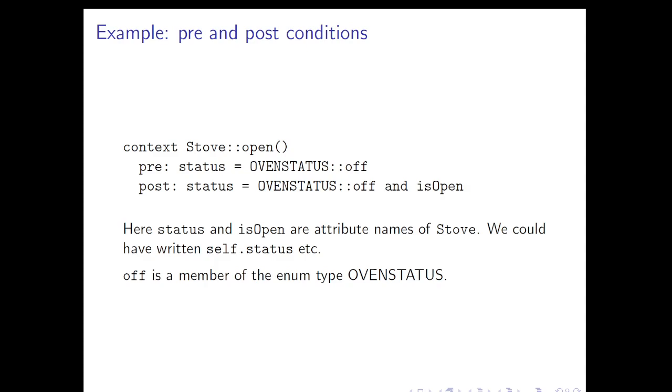The capitalized OvenStatus::off indicates that OvenStatus is an enum type and off is a member of it. So all we're saying here is that in order for the open operation to be invoked, it should be the case that the oven is off. The post condition is that the oven is still off and the isOpen attribute is now true. Remember that it's considered bad style to write isOpen equals true. We can just write isOpen. If isOpen has a boolean type, then it is a boolean. We just write isOpen to indicate that it's supposed to be true at the moment.